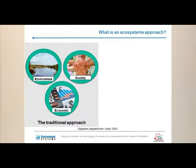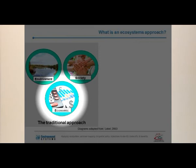So what is this ecosystem approach? This slide shows an example of the traditional approach. If an area of land was to be identified as having the potential for development, each of the three drivers — environment, economy and society — would be viewed in isolation. So if we were looking at siting a factory, we'd look at the economic benefit and the environment would only be taken into consideration in terms of constraints.